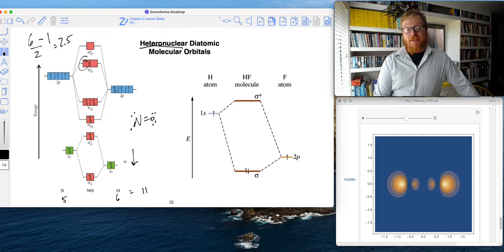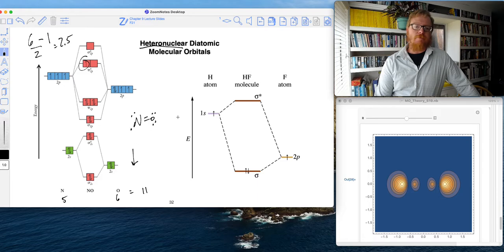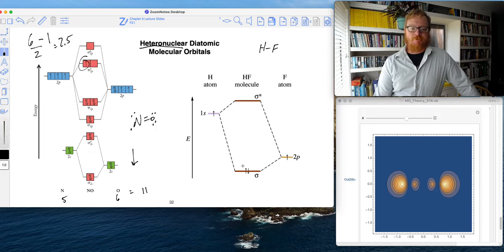And NO is very reactive, as you might guess, because it's a radical. So what about something simple like HF? Well, my Lewis structure predicts HF looks something like this.